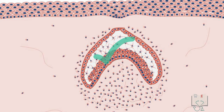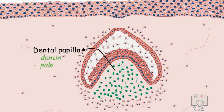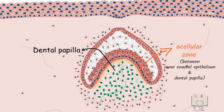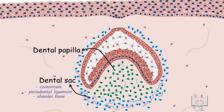Coming to the surrounding ectomesenchyme: the condensed ectomesenchyme just within the epithelial concavity is the dental papilla. Few fine collagen fibers are seen in the extracellular space. The dental papilla later forms dentine and pulp. A zone of connective tissue with no cells, called the acellular zone, separates the inner enamel epithelium from the dental papilla. The condensed ectomesenchyme surrounding the dental papilla and enamel organ is the dental sac, which shows numerous collagen fibers in the extracellular space. The dental sac later forms cementum, periodontal ligament, and alveolar bone.